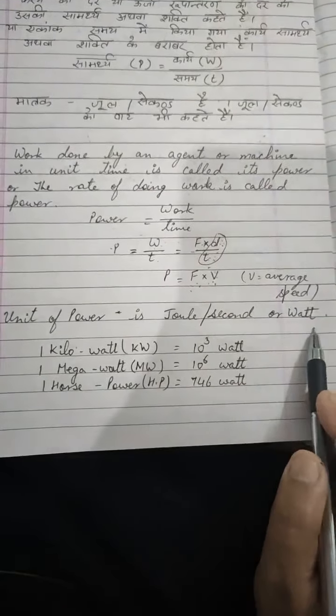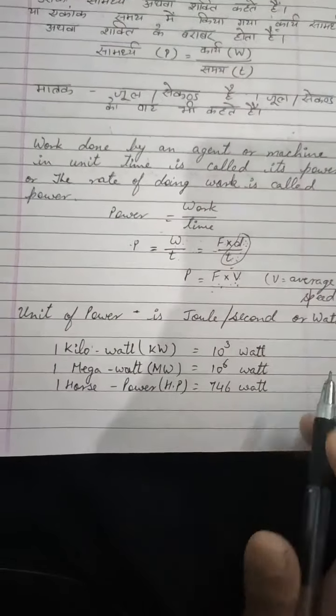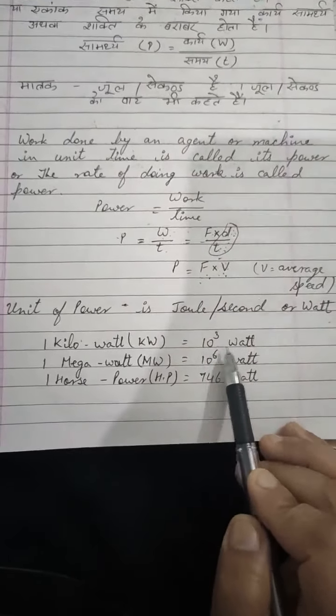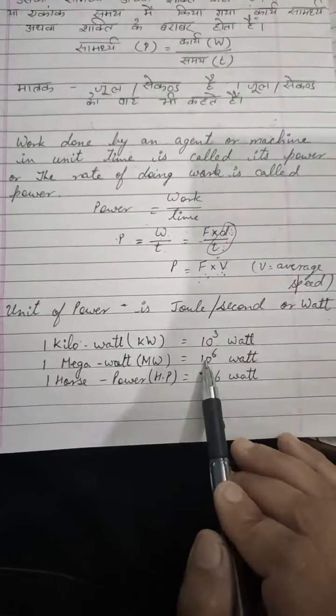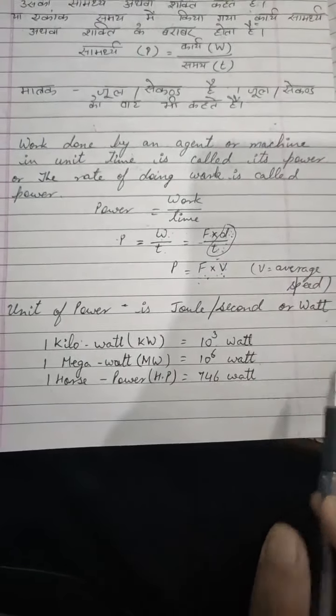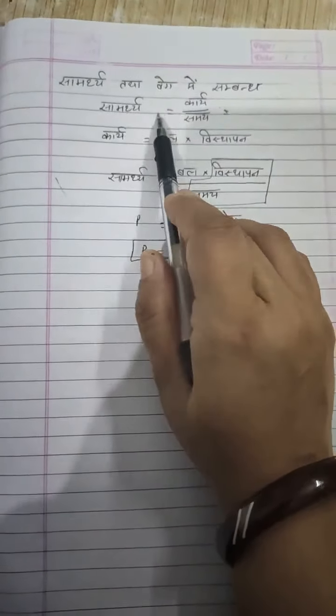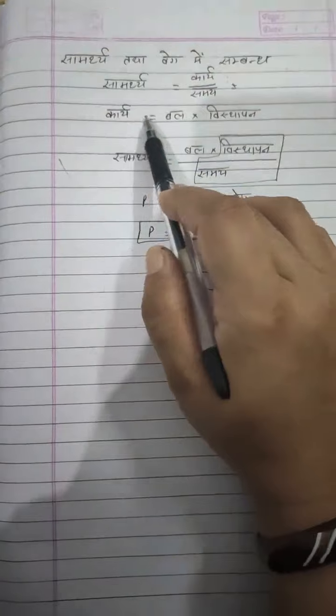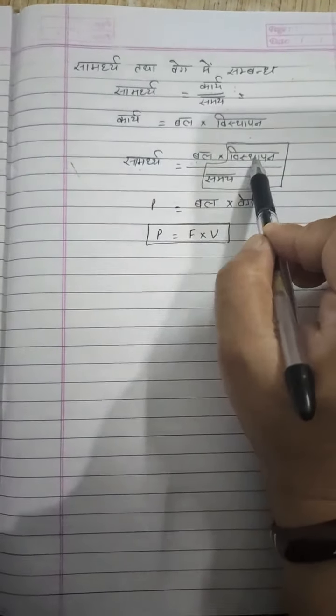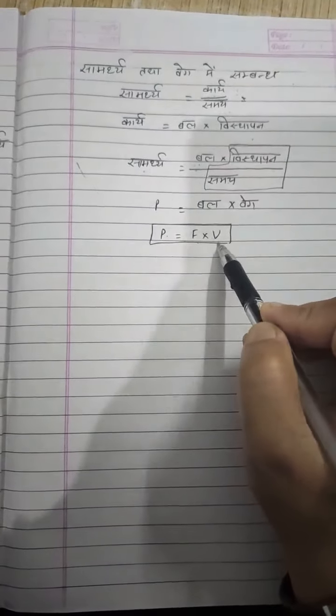The unit of power is joule per second or watt. Now in some questions it is given in kilowatt or megawatt or horsepower. So how to convert it into watt during the numericals? One kilowatt is equals to 10 to the power 3 watt, and one horsepower is equals to 746 watt.